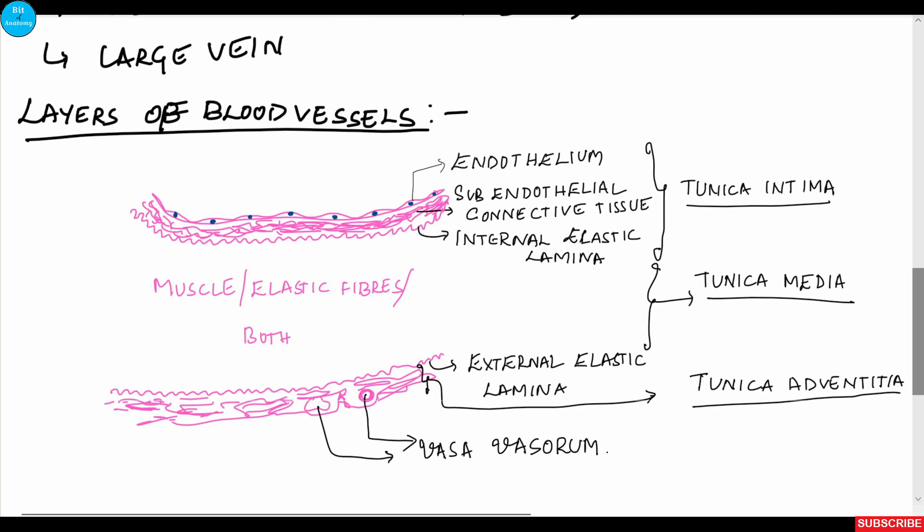To summarize, the three basic layers are: tunica intima — containing the endothelium, subendothelial connective tissue, and internal elastic lamina; tunica media — containing elastic fibers, smooth muscles, or a combination; and tunica adventitia — containing connective tissue and the vasa vasorum.